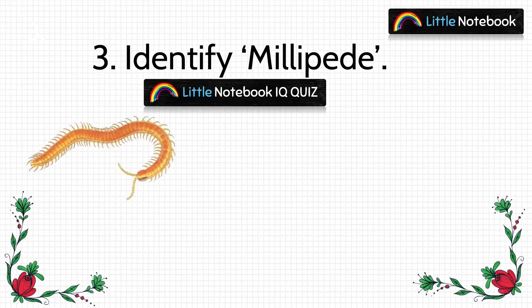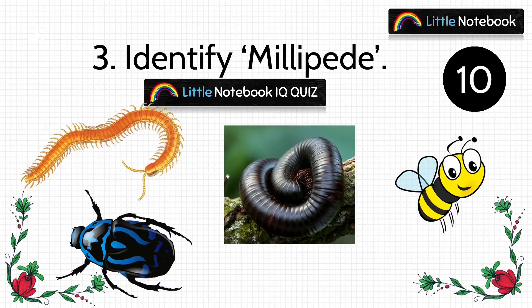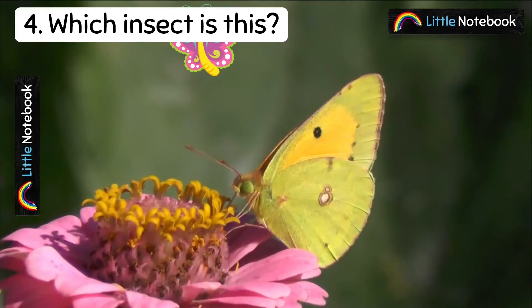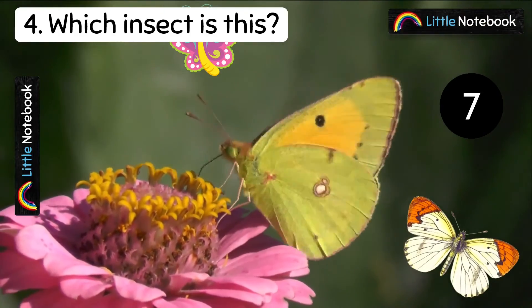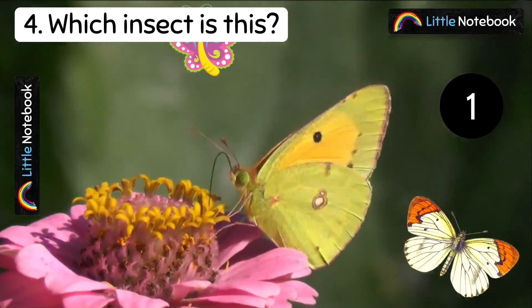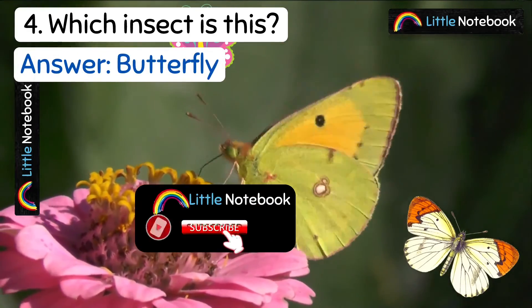Next question is: identify the millipede from the given insects. This is the millipede. Question 4 is: which insect is this? Answer is butterfly — this is a butterfly.